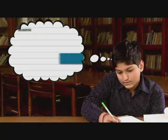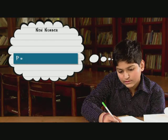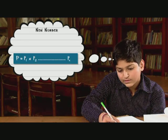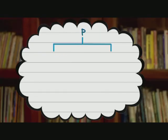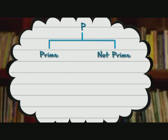Now, Arvind creates a new number, P, which is basically p1 into p2, all the way up to pn, plus 1. Now, we have two possibilities: that P is a prime, or P is not a prime.